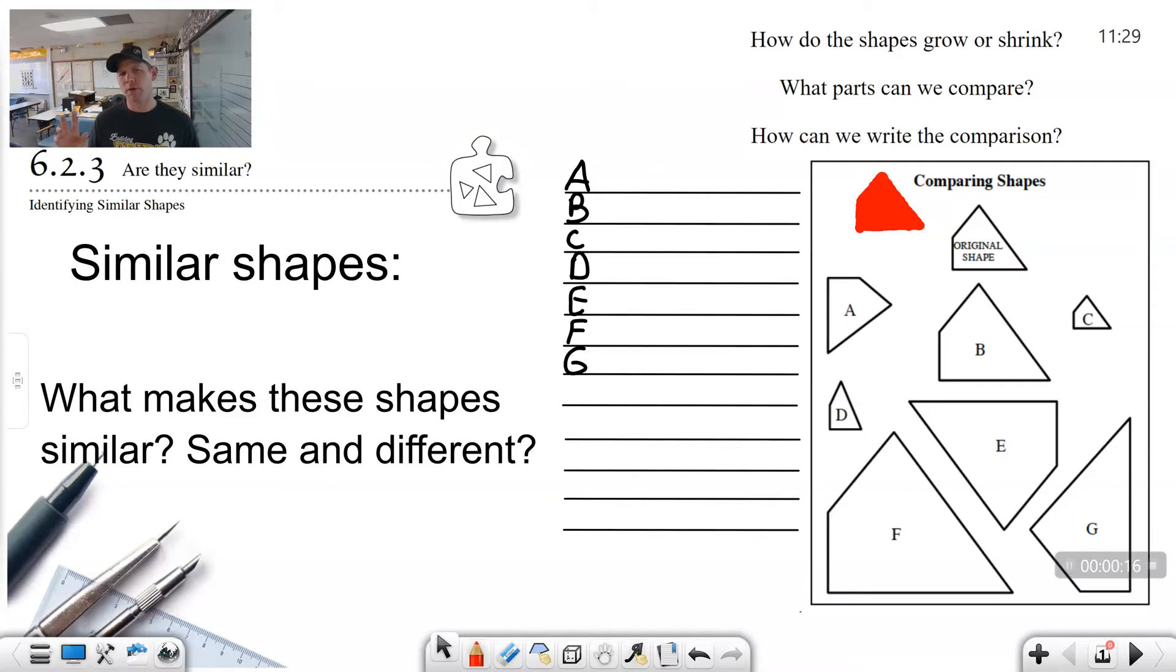Yesterday we had shapes that were a little bit distorted, and so today we are going to compare shapes. We're looking at these shapes: How do the shapes grow or shrink? What parts can we compare? And how can we write comparisons? These are some of the things that we're going to be thinking about.